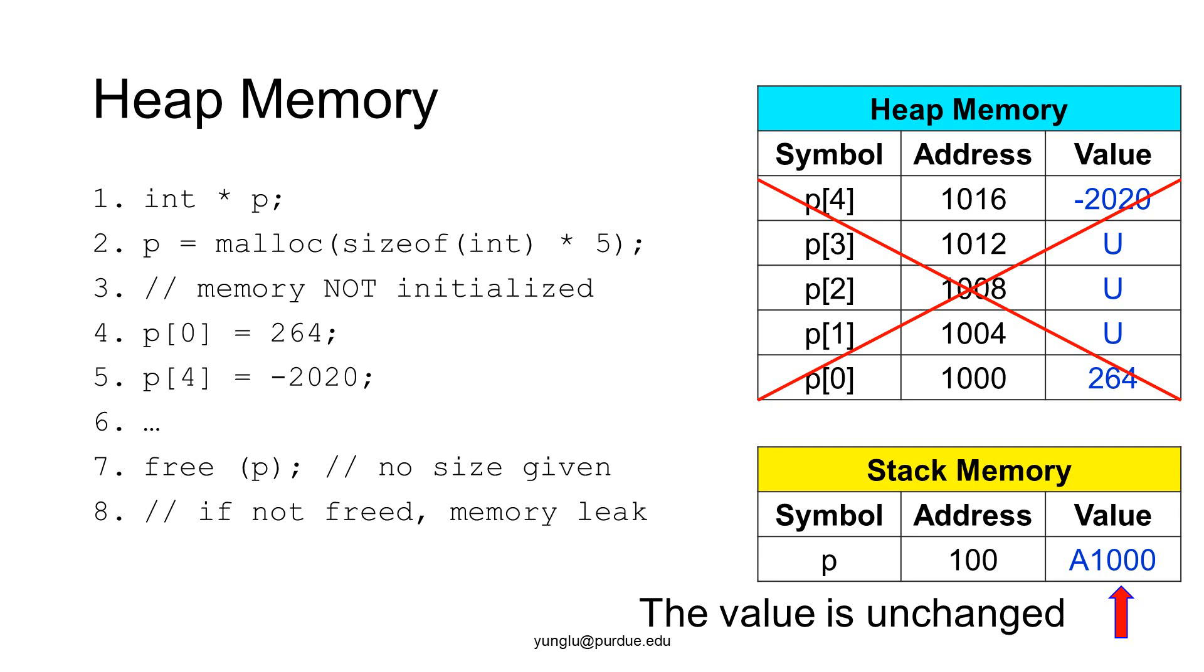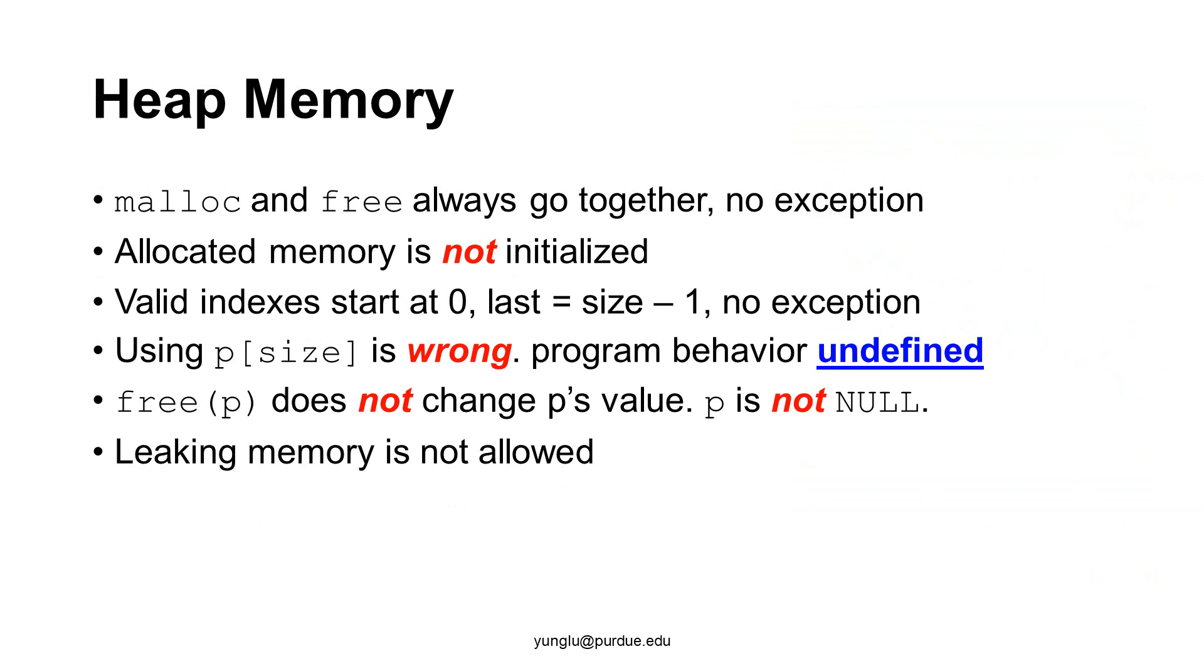Here are some important principles of using heap memory. First, malloc and free are always together. Each malloc must have one and exactly one free. Each free must have one and exactly one malloc. There is no exception to this rule. The allocated memory is not initialized. We do not know what is stored in the values of the memory allocated by malloc. The array index always starts from zero. The last valid index is the array's size minus one. There is no exception. Using the size as the index is wrong. The program's behavior is undefined. It is difficult to know what the program may or may not do later.